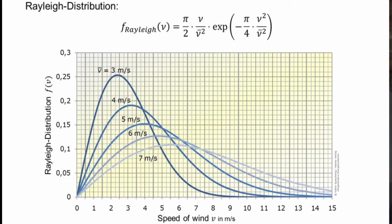Let's take a look at the Rayleigh distribution for different average wind speeds. We have wind speeds of 3, 4, 6, and 7 meters per second to see how the form is changing.